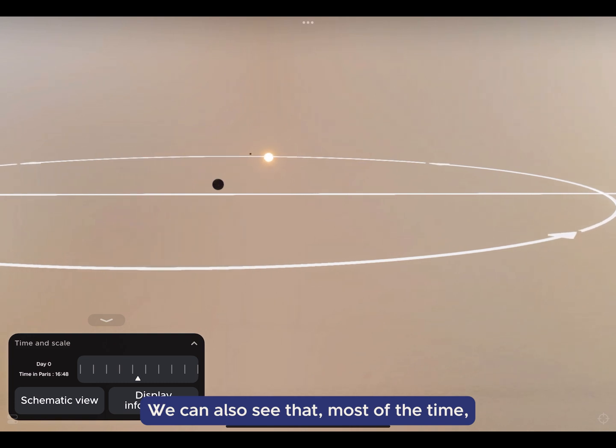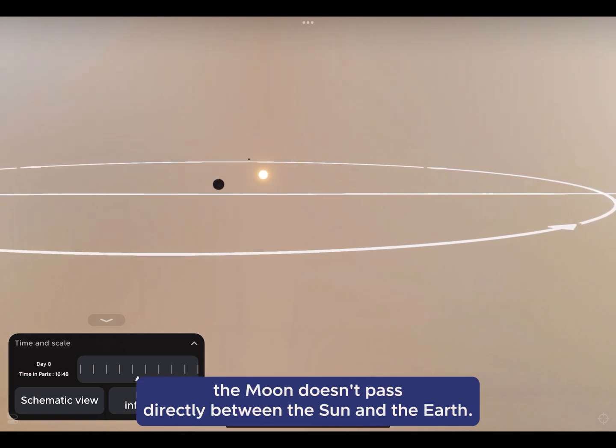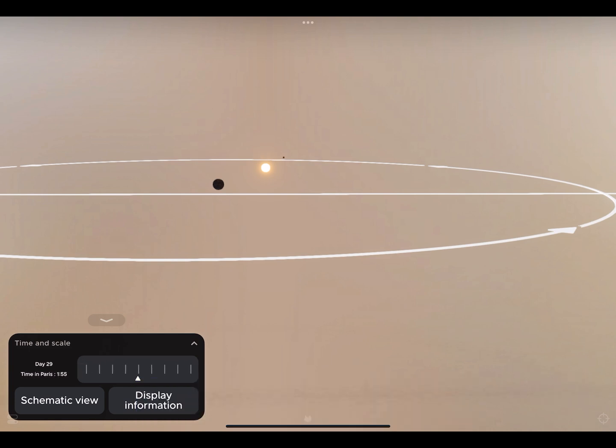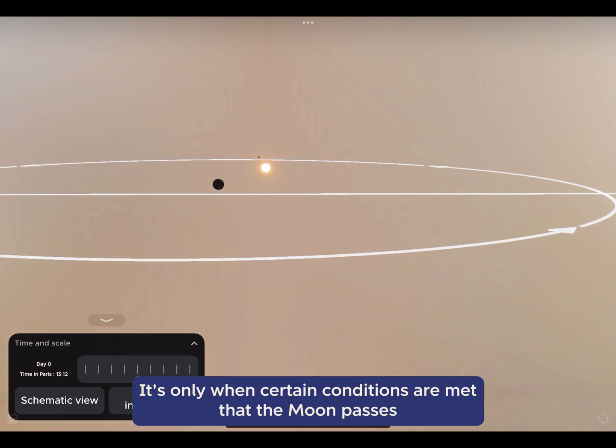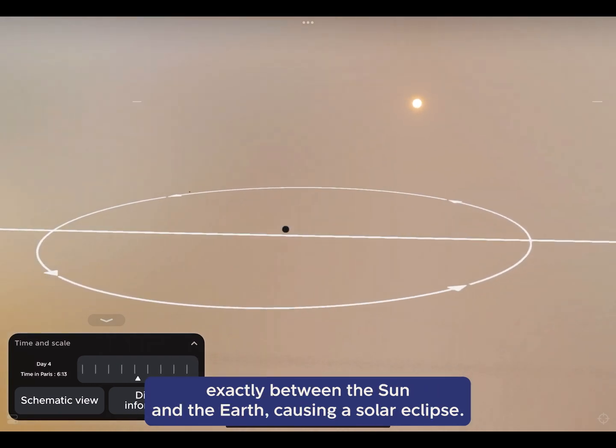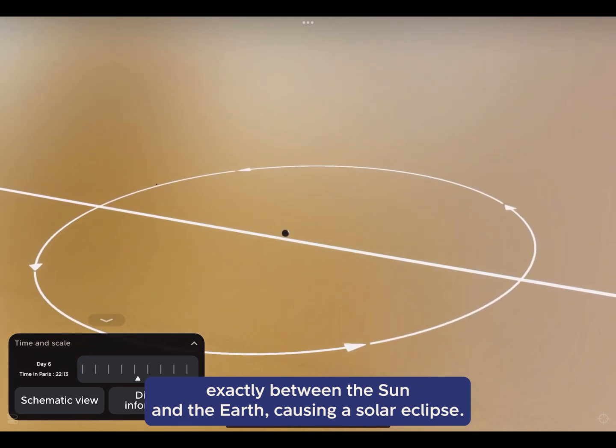We can also see that most of the time, the Moon doesn't pass directly between the Sun and the Earth. It passes beside the Sun. It's only when certain conditions are met that the Moon passes exactly between the Sun and the Earth, causing a solar eclipse.